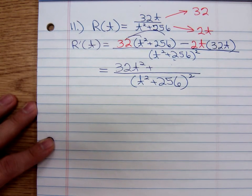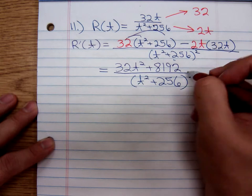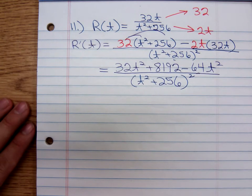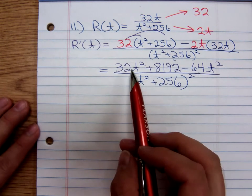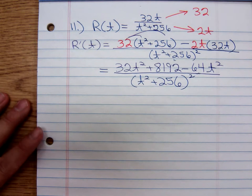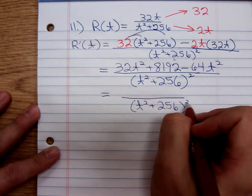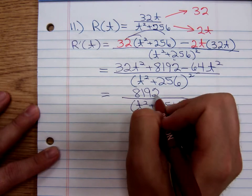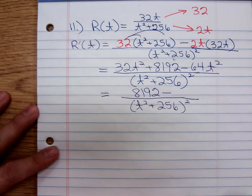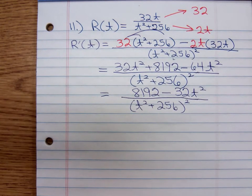We're going to get 32t² + 8,192, and here we get a minus 64t². And we can combine the t² terms: 32t² minus 64t² gives us minus 32t² for my derivative, with 8,192 minus 32t² over (t² + 256) quantity squared.